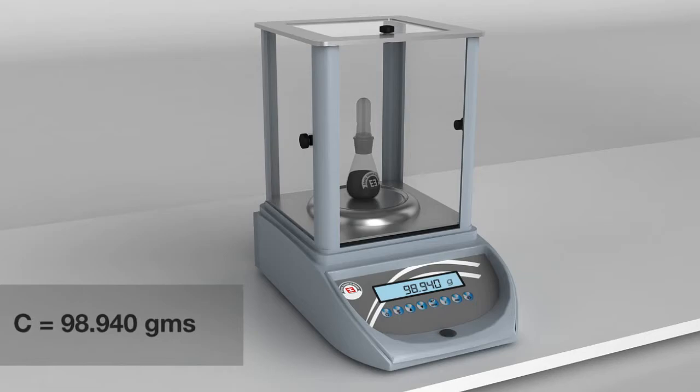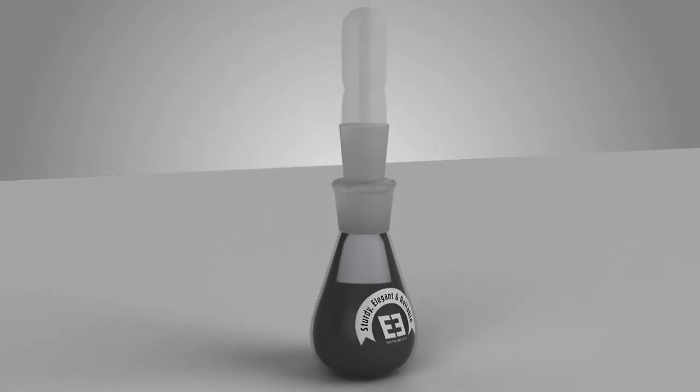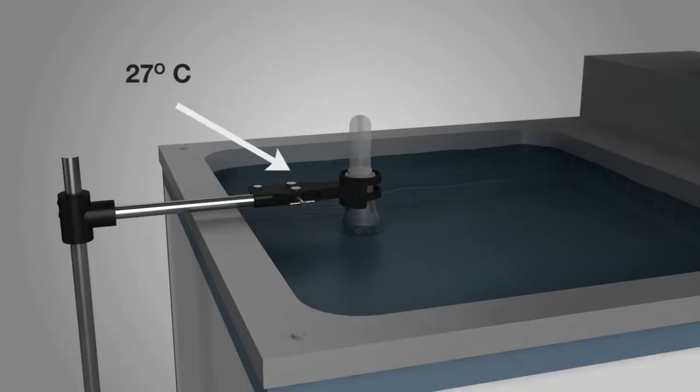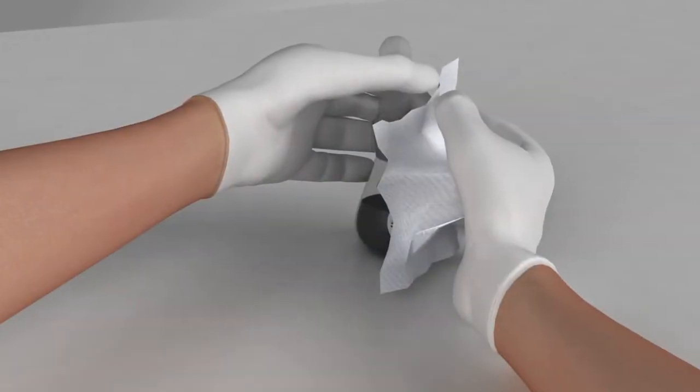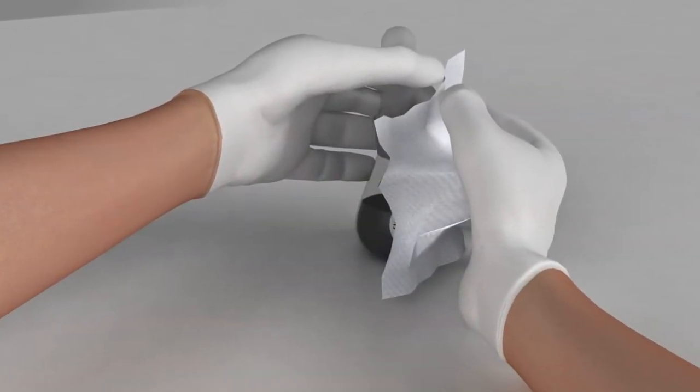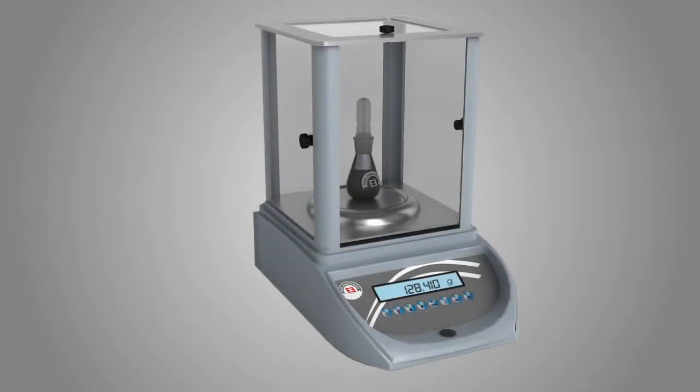The remaining space in the bottle is filled with distilled water, stopper is placed and kept in water bath at 27 degrees Celsius for 30 minutes. Clean and wipe the outer surface of the bottle. Note down the weight of the specific gravity bottle half filled with bitumen and the rest with distilled water as D, which is equal to 128.410 grams.